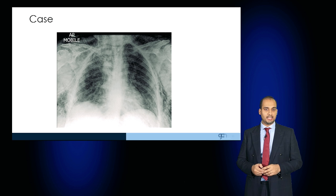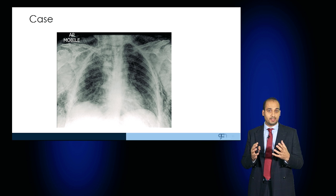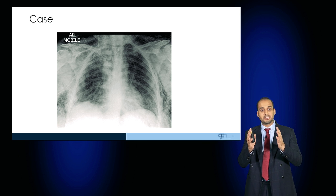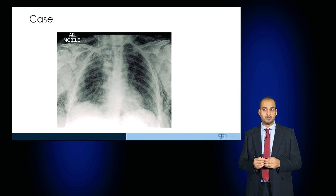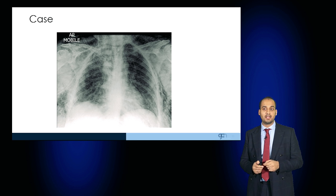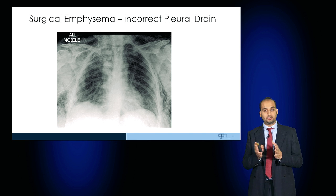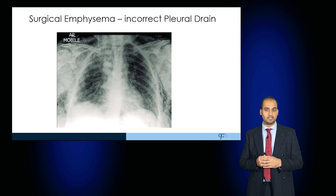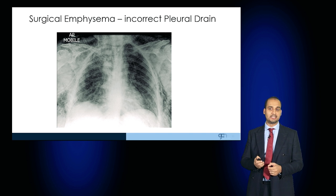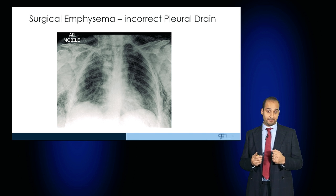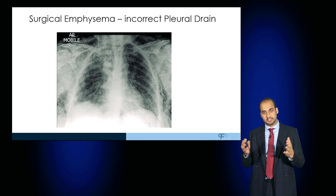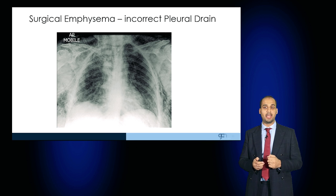The next case looks rather abnormal and has this patchy appearance, not only over the chest wall but outside of the chest wall as well. This is a case of surgical emphysema causing pleural air to be trapped in the subcutaneous tissues. This occurred as a result of an incorrectly sited pleural drain. If you palpate this patient, you'll notice a very crispy texture to the skin, suggestive of subcutaneous emphysema.